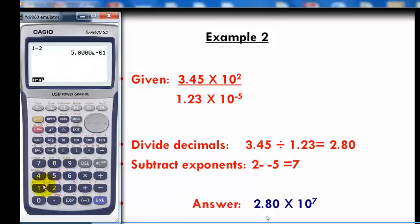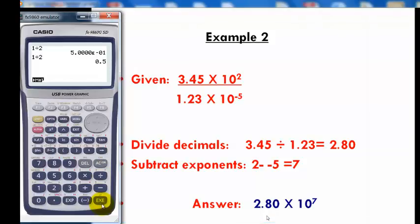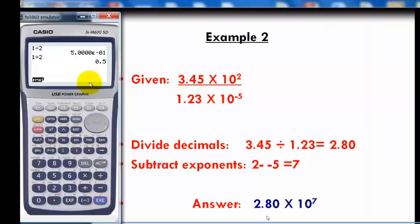Alright, so when you divide 1 by 2, we will no longer get a scientific notation answer, but we'll get a decimal .5. There we go. So, don't worry if you're going to add, subtract, scientific notation, it should be very easy to check our answer. We can use our Casio.